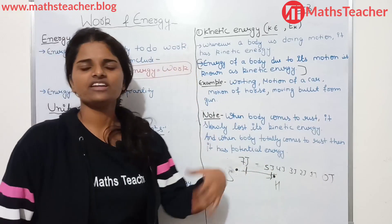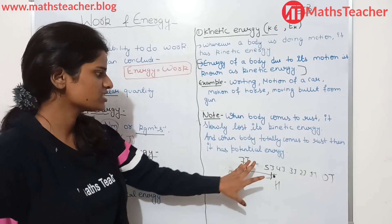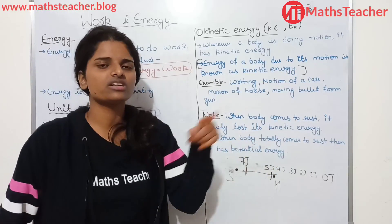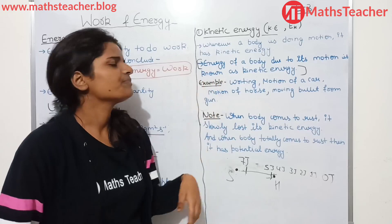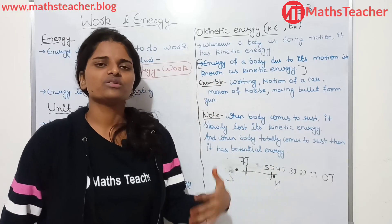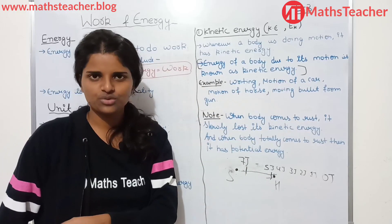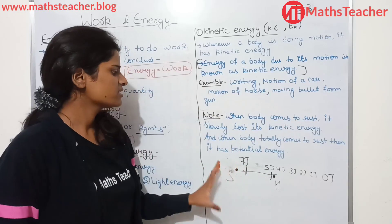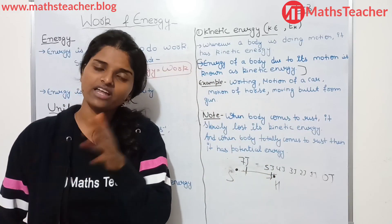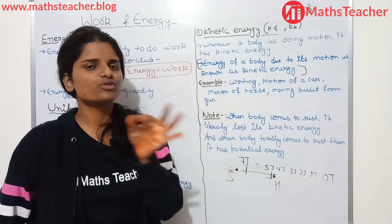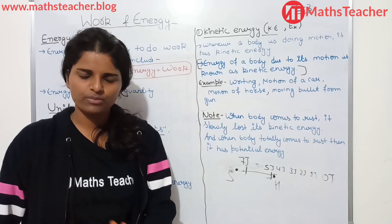When the body is at rest, kinetic energy becomes zero and potential energy remains. When the body moves again, kinetic energy increases and potential energy decreases. To differentiate both: when the body is moving, which energy? Kinetic energy. When the body comes to rest, which energy? Potential energy. Keep in mind, as the body slowly moves, potential energy increases and kinetic energy changes accordingly.